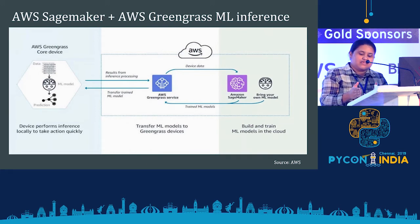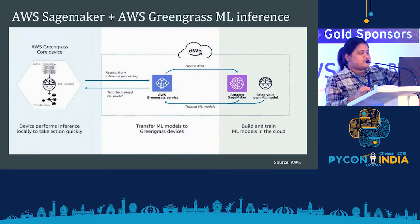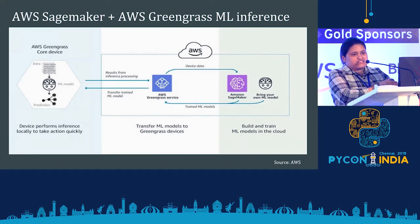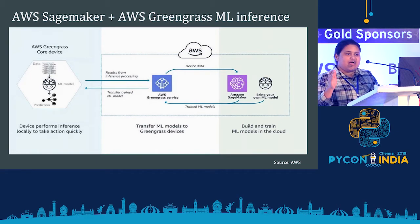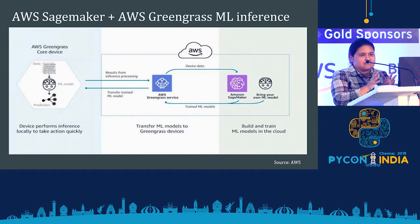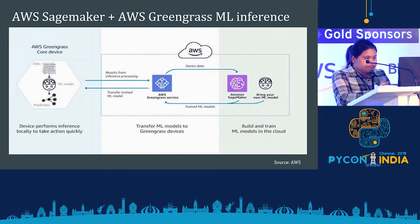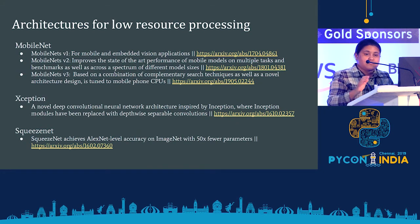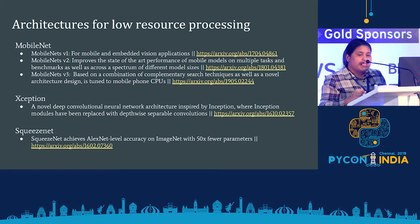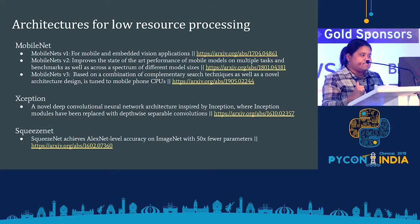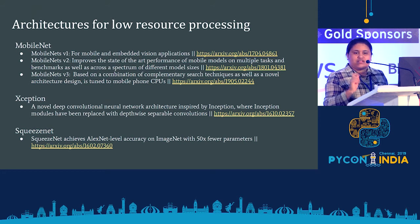AWS Greengrass core device helps you collect and manage IoT device settings, controlling the IoT application phase. There are also various deep learning architectures specifically built for low-resource-constrained networks. One is MobileNet — there are three versions of it. There is also the Xception architecture, and another called SqueezeNet. These are mostly used for object detection. Archive links are available so you can go and explore them.